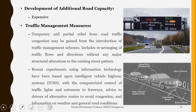The second solution is traffic management measures. Temporary and partial relief from road traffic conditions can be gained from introducing traffic management schemes, which includes rearranging traffic flows and directions or making some streets one-way, without major structural alteration to existing street patterns. Recent experiments using information technology — intelligent vehicle highway systems with computerized control of traffic lights and freeway entrances — advise drivers of alternative routes to avoid congestion, helping reduce congestion on streets.